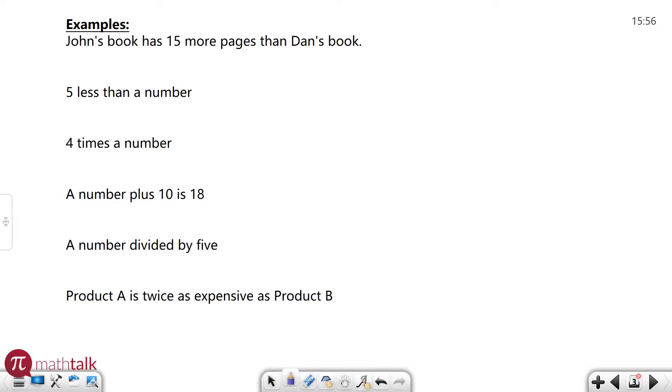Alright, so one of the examples says John's book has 15 more pages than Dan's book. So I see right here I have the word 'more than,' so I'm going to use that plus symbol. John's book has 15 more than Dan's book. So let's say Dan's book is represented by B for book, and more than means plus symbol, and 15. So there's your representation: B + 15.